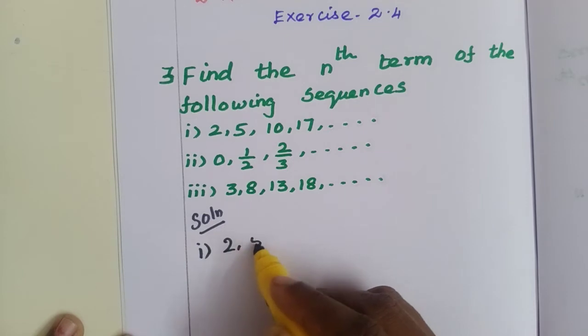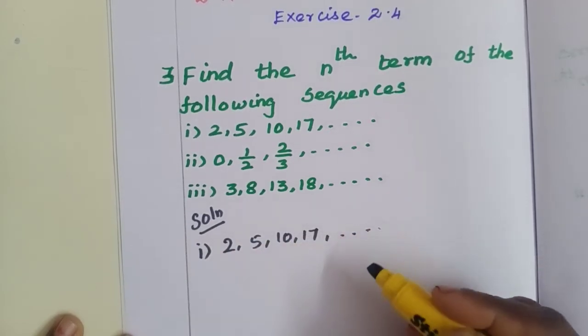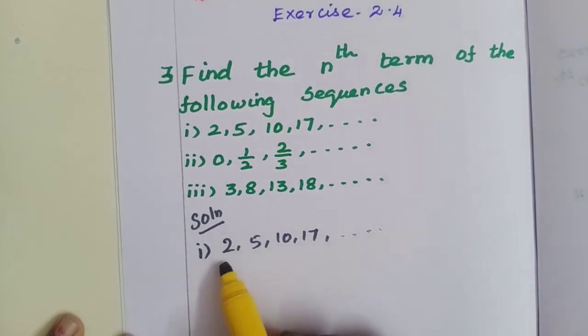First sequence: 2, 5, 10, 17, etc. So this is the first place is 2, second place is 5.